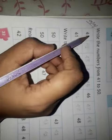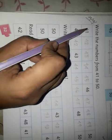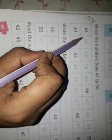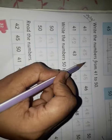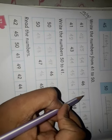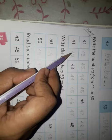Let's start our class. Write the numbers from 41 to 50. So 41, 42, 43, 44, 45, 46, 47, 48, 49, 50.